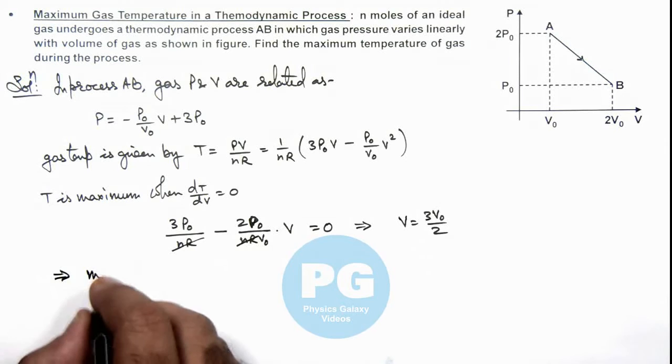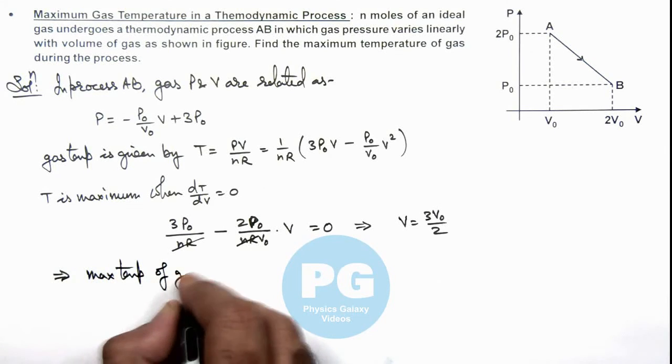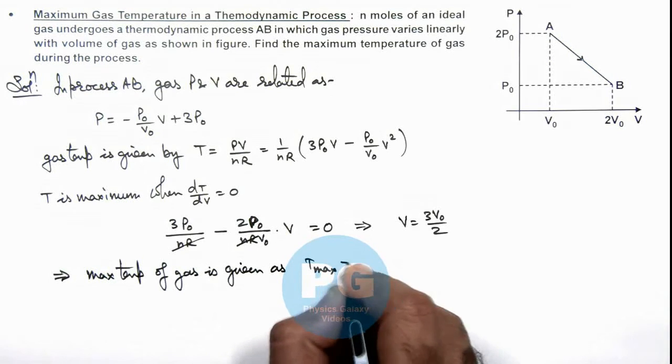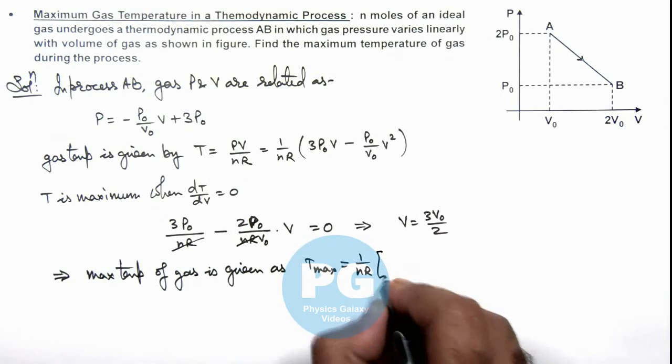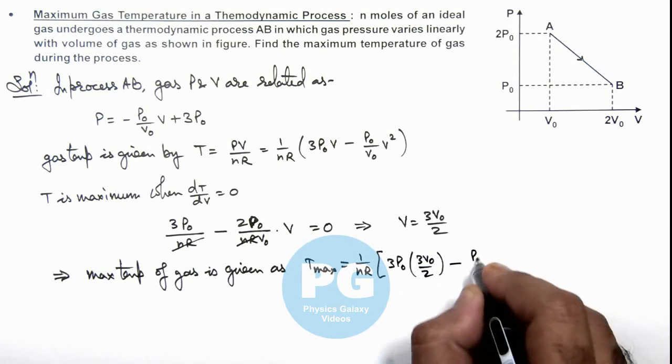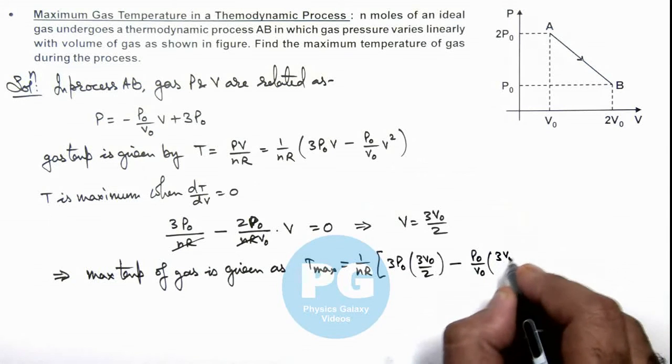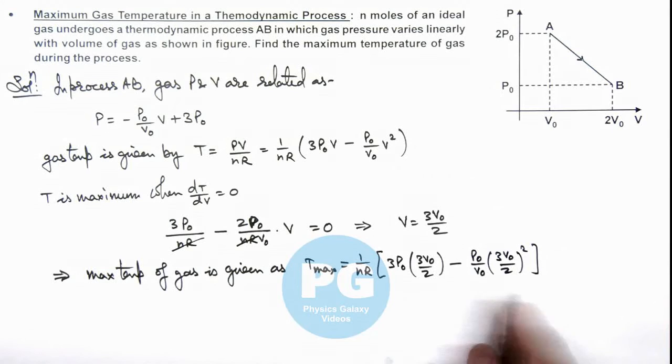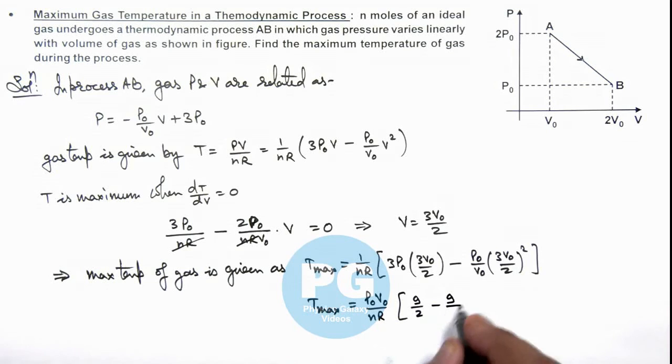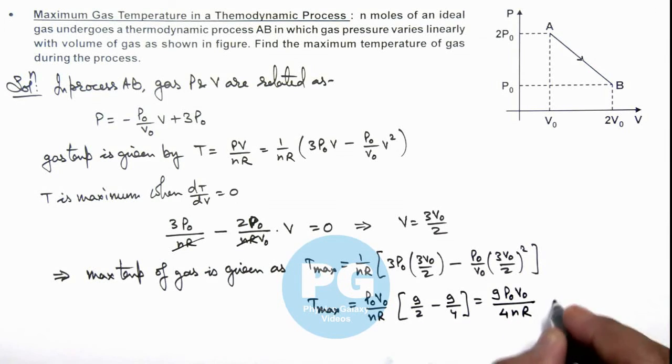The maximum temperature of gas is given as: T_max equals 1 by nR multiplied by (3P₀ times 3V₀/2 minus P₀ by V₀ multiplied by (3V₀/2) squared). Simplifying this relation, P₀V₀ can be taken out, so maximum temperature equals P₀V₀ by nR times (9/2 minus 9/4). This gives us 9P₀V₀ by 4nR - that is the result of this problem.